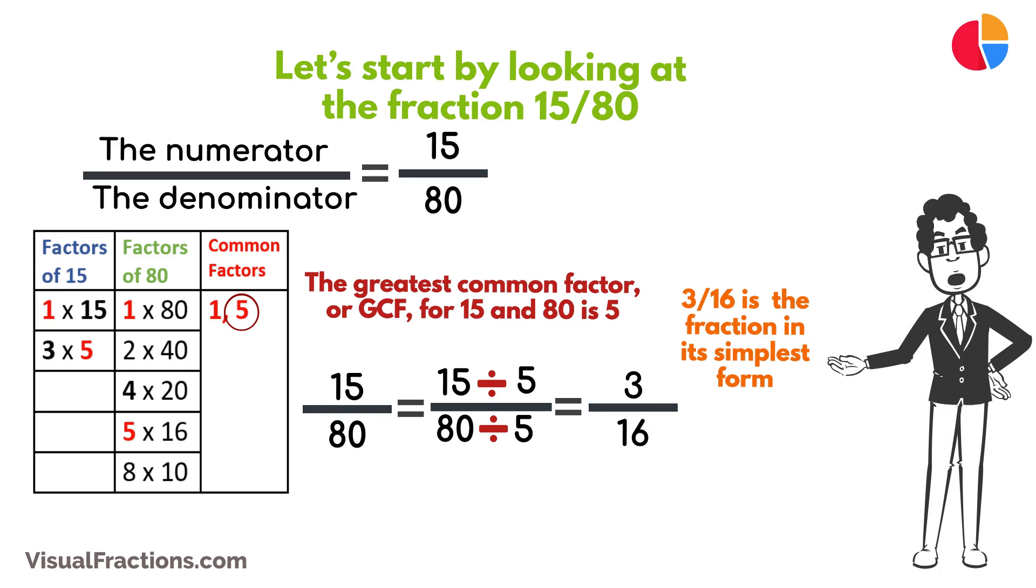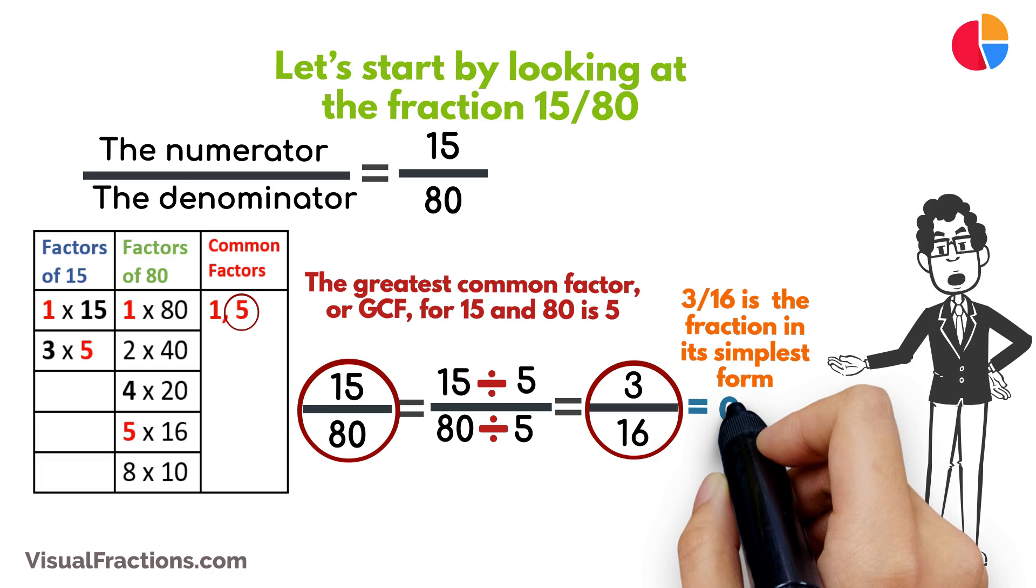It's interesting to note that both the original fraction 15/80 and the simplified fraction 3/16 are equivalent in their value when compared as decimals, though the exact decimal value for 3/16 is approximately 0.1875.